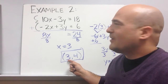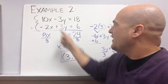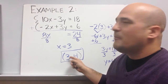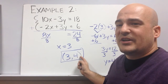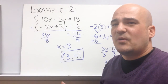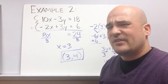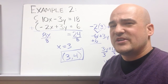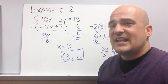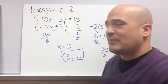Also, whenever you plug 3 for x into one of these equations, both times you're going to get 4 for your y value. That's the point where these two equations are equal — where these two equations are the same. That's example number 2. Let's do one last example.